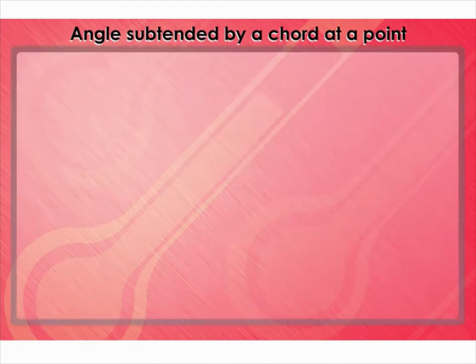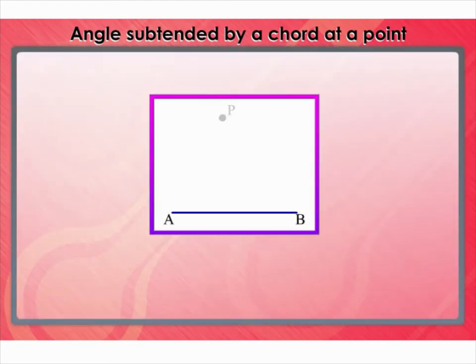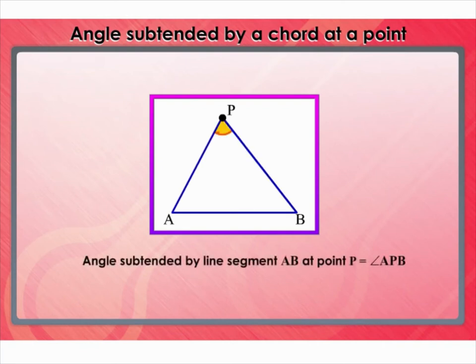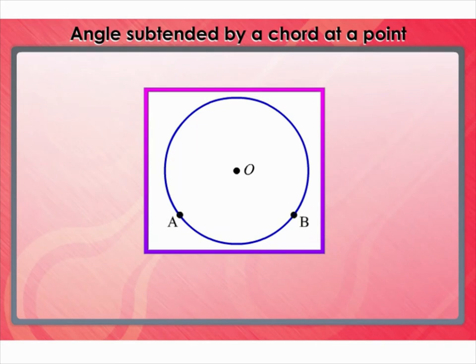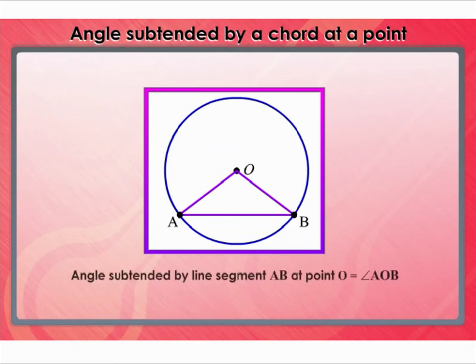Angle subtended by a chord at a point. Let's take a line segment AB and take a point P not on the line containing AB. To find the angle subtended by line segment AB at point P, join AP and PB. Then angle APB is called the angle subtended by the line segment AB at point P. Now draw a circle with center O and take any two points A and B on the circle and join AB. The chord AB subtends angle AOB at center O, found by joining AO and OB.